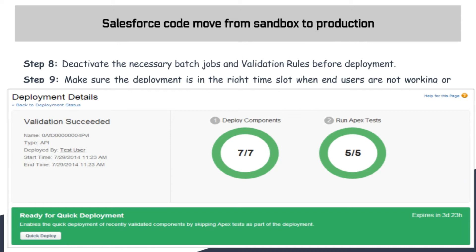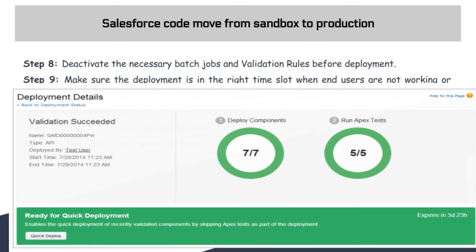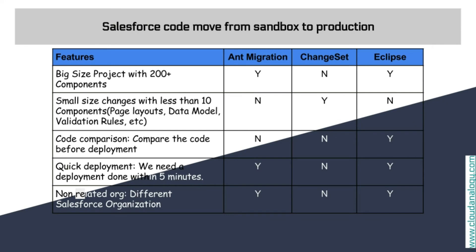There are different tools for deployment. ANT migration and Eclipse are more or less the same, but Eclipse gives the added advantage of coding as well — features like code comparison can be done in Eclipse. In most cases, we would not recommend changesets if you have code access and metadata API access; instead, use ANT migration or Eclipse.